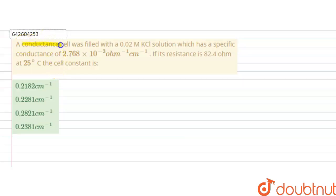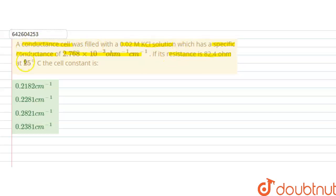Hello students. The question is: a conductance cell was filled with a 0.02 molar KCl solution which has a specific conductance of 2.768 × 10⁻³ ohm⁻¹ cm⁻¹. If its resistance is 82.4 ohm at 25°C, the cell constant is?